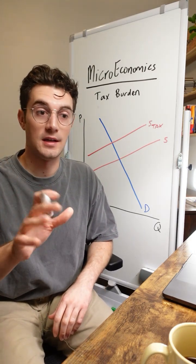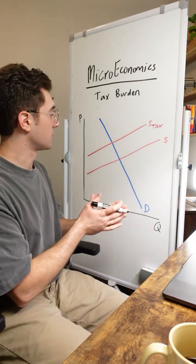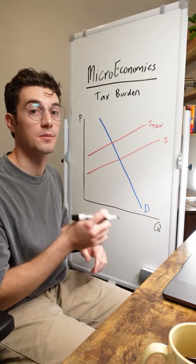All right, with that said, the first thing to take note of when it comes to tax burden problems is where the old equilibrium price lies.